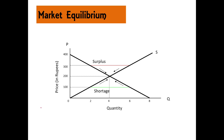Let us understand this with the help of a diagram. Our equilibrium price is 200, and at this point there is equality of both demand and supply — 400 units of suits are supplied. If somehow price is above the equilibrium, say at 300, this brings surplus into the market: supply is more than demand, demand is less than supply. There is competition among sellers to sell the product, which brings the price down.